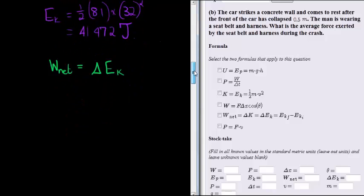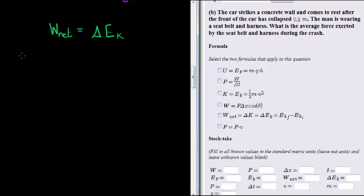That's simple enough. And the network done is the net forces acting on an object times the displacement over which it is operating times cosine of the angle between the displacement and the net force.